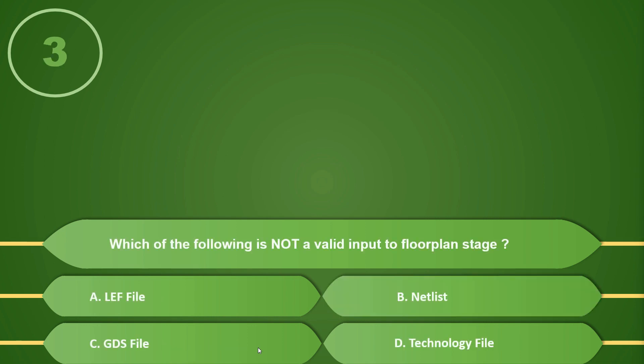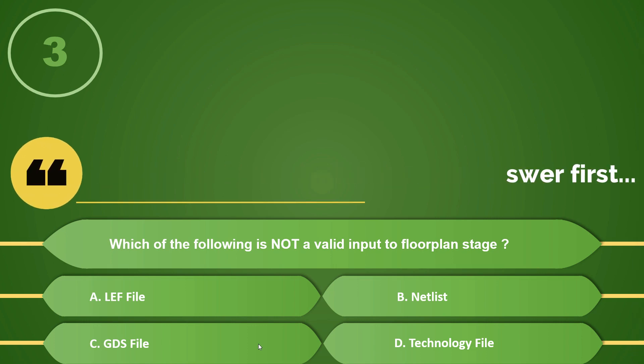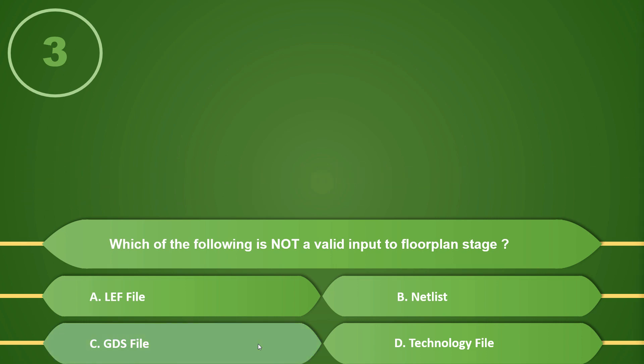Which of the following is not a valid input to the floor plan stage? Options: A) LEF file, B) Netlist, C) GDS, or D) Technology file. If your answer is C, GDS file, then you are correct — it is not an input; it is in fact the output after the floor plan is done.